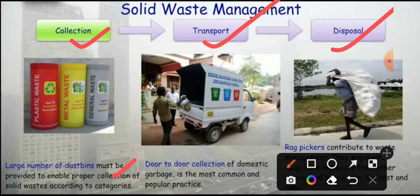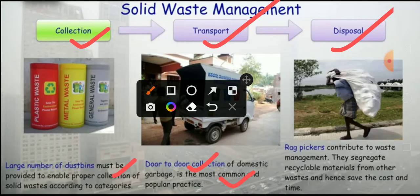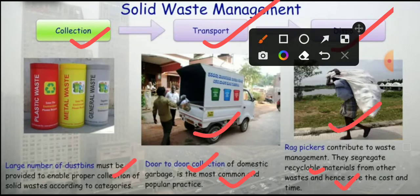For transportation, door-to-door collection of domestic garbage is the most common and popular practice. Garbage is collected door to door. Rag pickers also contribute to waste management — they segregate recyclable materials from the waste and hence save cost and time. You can see figures illustrating this in the video.